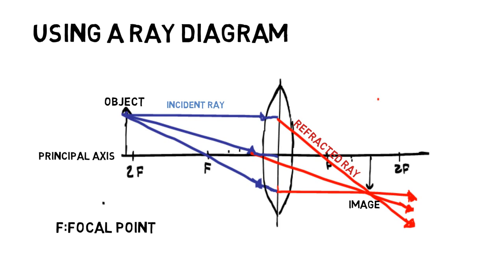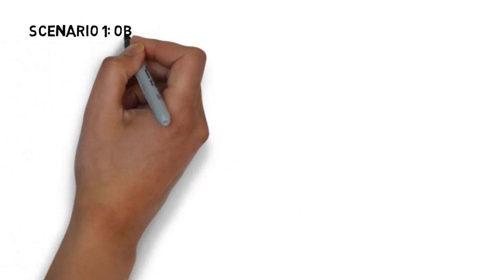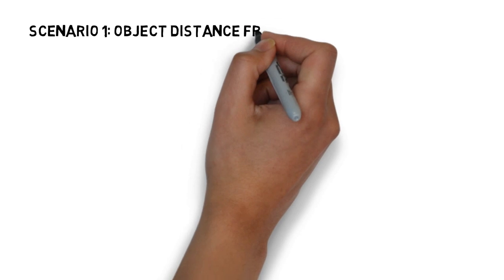Like we stated earlier, the resulting image varies depending on the object's distance from the lens, and we will show you three different scenarios. So let's start with our first scenario, where the object's distance from the lens is greater than 2F.